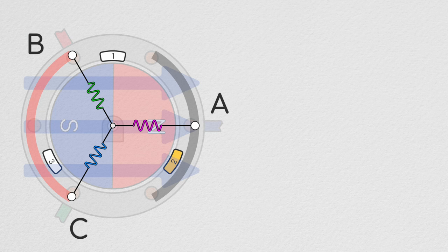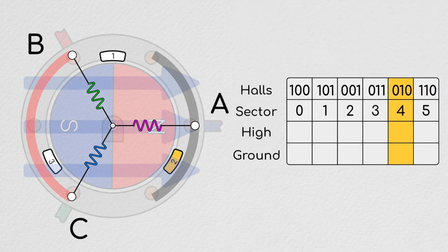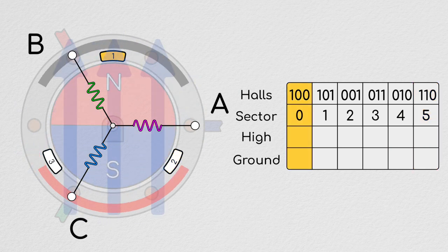Progressing through the six Hall sectors, we can thus develop a table of what node we want to connect to high and what node we want to connect to ground for any given orientation. When in Hall Sector 0, we see that node C needs to connect to our high voltage and node B needs to connect to our ground, so we can set our H-bridge accordingly.